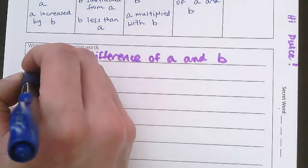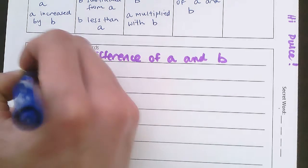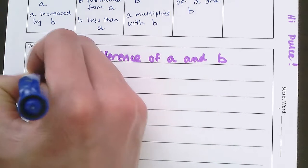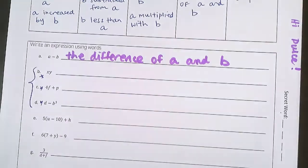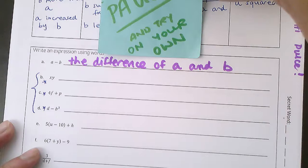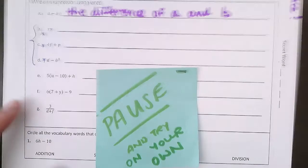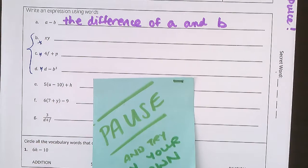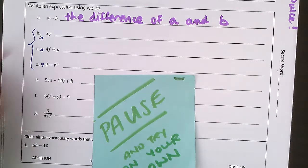What I'm going to have you do now is b, c, and d — those three expressions. Go ahead and try to write out those on your own first. Pause and try those three, and then we'll check in once you're done. Go.